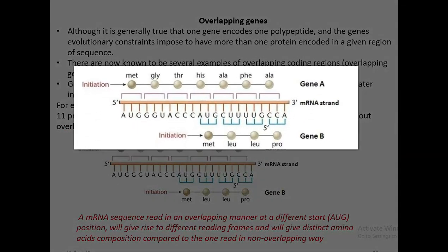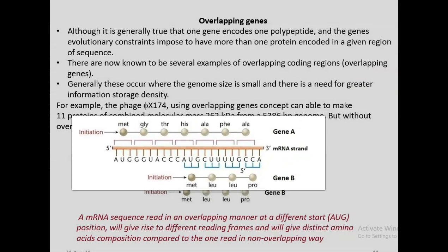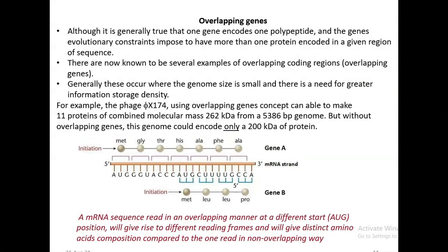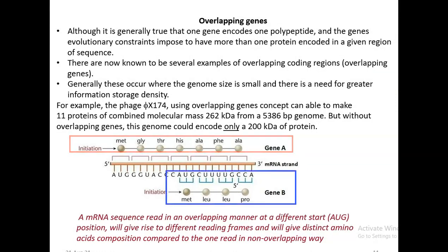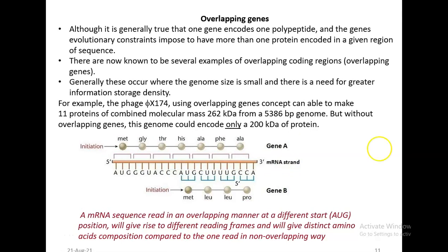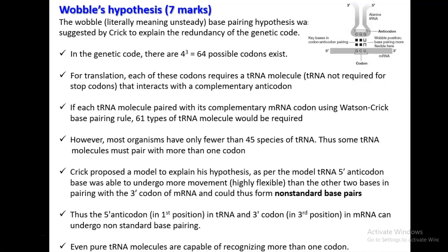You look at the diagram of the overlapping genes. A single gene fragment has been read in two different ways, represented in the diagram as gene A and gene B. A definition for overlapping genes: it refers to an mRNA sequence read in an overlapping manner at different start AUG codons, which will give rise to different reading frames that possess distinct amino acid composition compared to one read in a non-overlapping way.